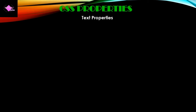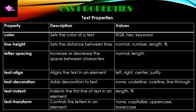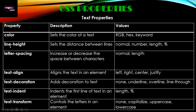Now we will see the major CSS properties. The first category is text properties. 'color' sets the font color — value given using RGB, hexadecimal, or keyword color name. 'line-height' sets the distance between lines — default is 'normal', and value can be a number, length, or percentage. 'letter-spacing' increases or decreases the space between characters — default is 'normal', value in pixels.